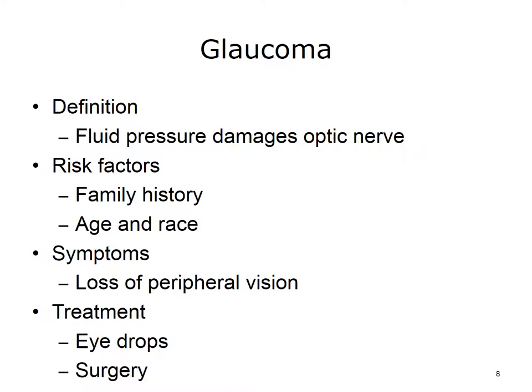Glaucoma is the leading cause of blindness in the U.S. It usually occurs when the fluid pressure inside the eyes slowly rises, damaging the optic nerve. Often, there are no symptoms at first, but a comprehensive eye exam can detect it. People at risk include African Americans over age 40, other people over age 60, especially Mexican Americans, and people with a family history of glaucoma. Treatment includes prescription eye drops and/or surgery.